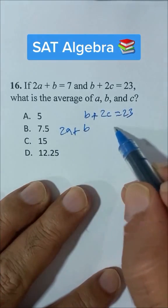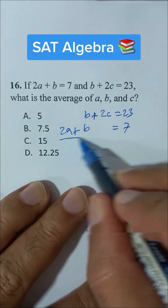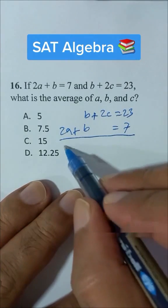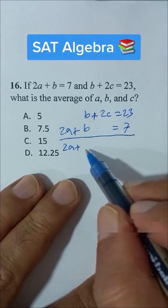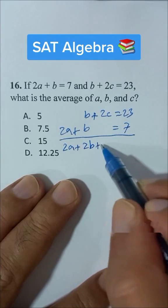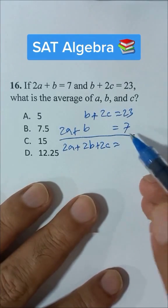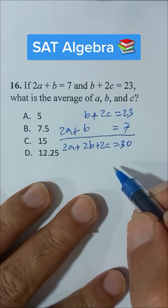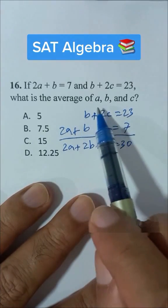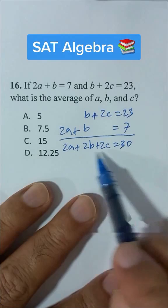plus b is equal to 7. If we add these two equations, we have 2a plus 2b plus 2c is equal to 23 plus 7 is 30. Now what is the average of a, b, and c? If I divide